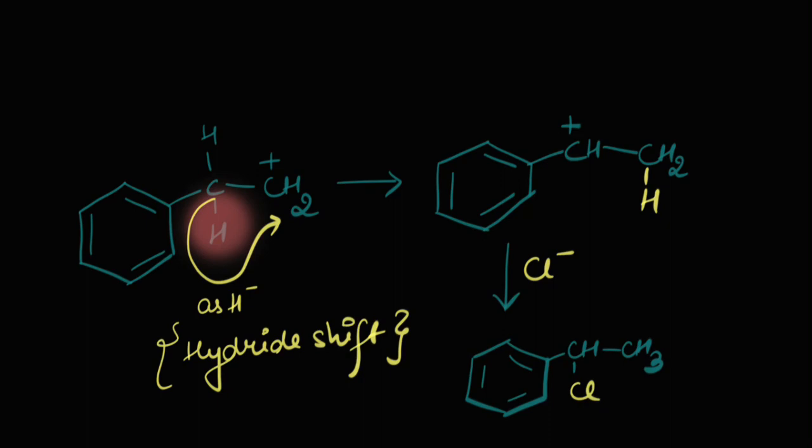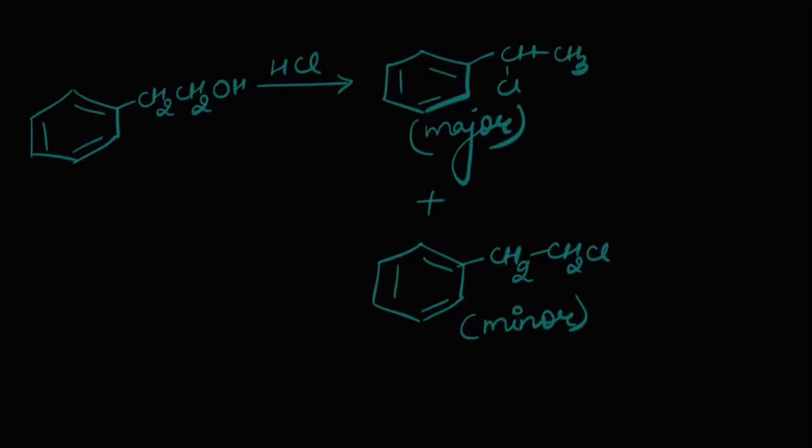Hey, the previous carbocation wouldn't form any product. It would, it would. But not in a higher amount. So the reaction looks something like this. The rearranged carbocation forms the major product.